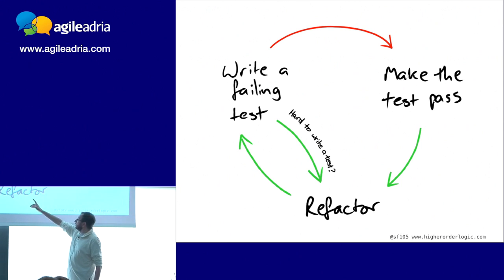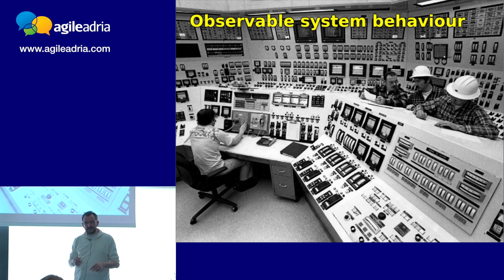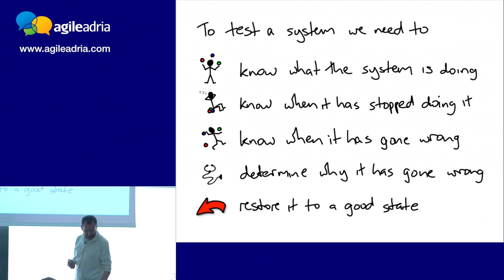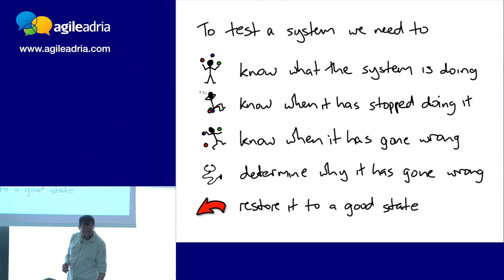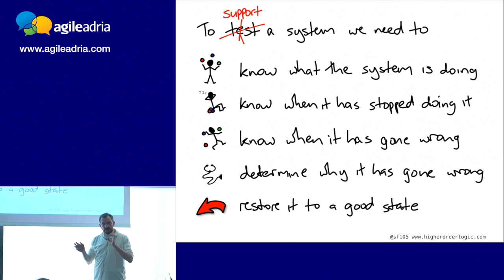It's hard to write a failing test — that's a clue that maybe it's trying to tell you something about the system. One of the things we're trying to get to is a system we can actually observe and monitor. What we want to do is understand its current state, detect and diagnose errors, and clean up. What we've found is that the sort of things we need to do to be able to test are the sort of things we need to support the system in production. When you're trying to test a system and can't get the information you need out of it, that's a clue.